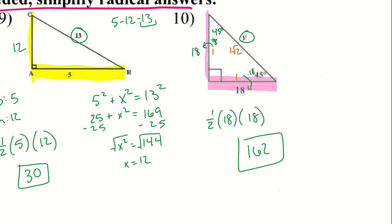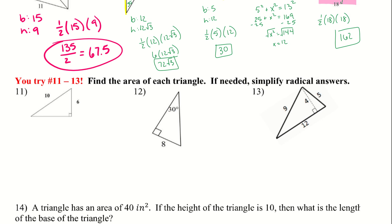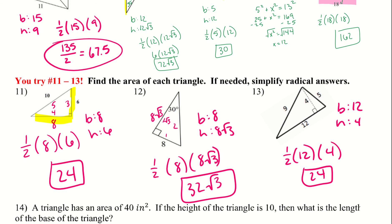Go ahead and try problems 11, 12, and 13, using what we know about special right triangles, Pythagorean triples, or the Pythagorean theorem. Remember you only need the base and the height. Pause the video and try it out. Here are 11, 12, and 13 — remember to simplify radical answers, so for number 12 make sure we still have root 3 and not a decimal.